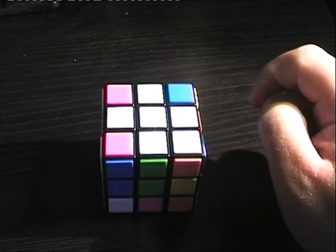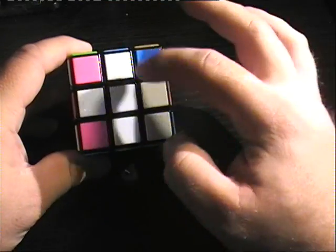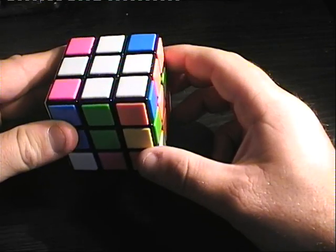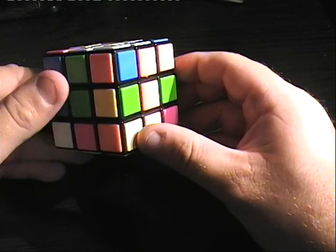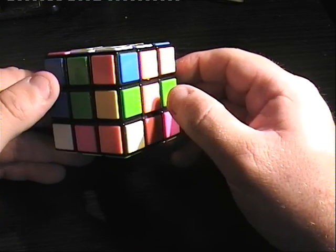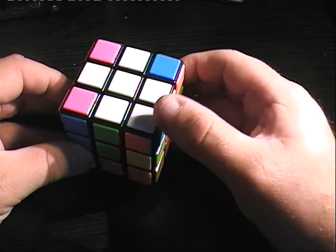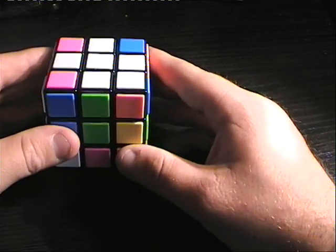Hello again, welcome to part three. Now then, we've made our cross. You'll notice in our example here we've got one of the corner pieces in place as well, but as you can see it doesn't match the center pieces of the two sides. So that corner piece is not actually in the right place.